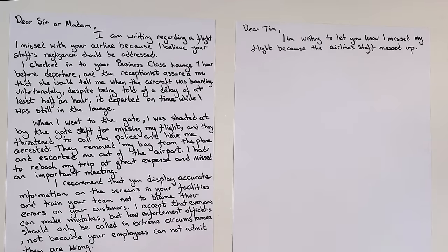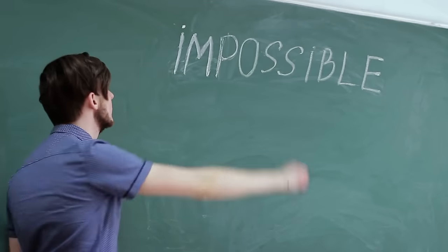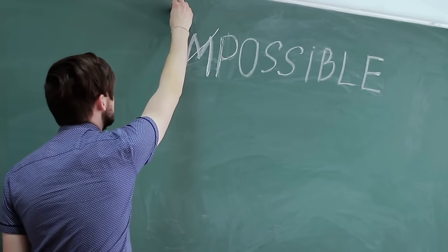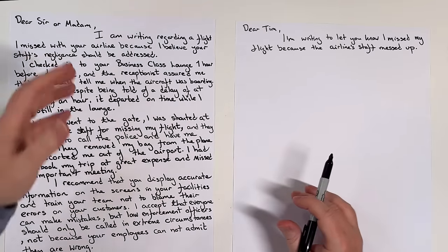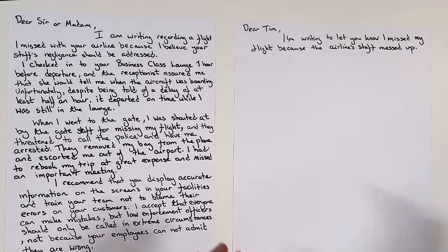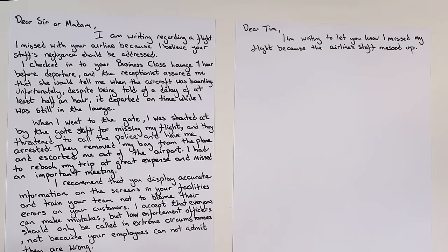All you're doing is thinking how can I change this slightly to make some things informal — not every single word, because if you try and do that with every single word it's impossible. All you're doing is looking at things and thinking: okay, I am — let's use a contraction, I'm. Regarding — let you know. Staff's negligence should be addressed — they messed up. If you do that enough, your writing will become a lot more informal.